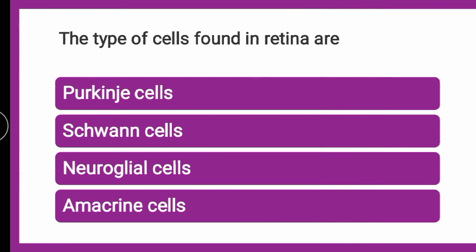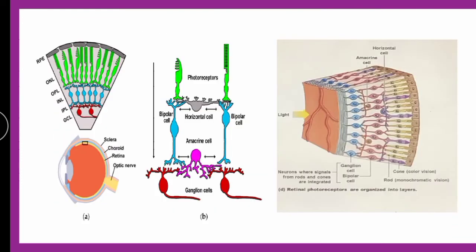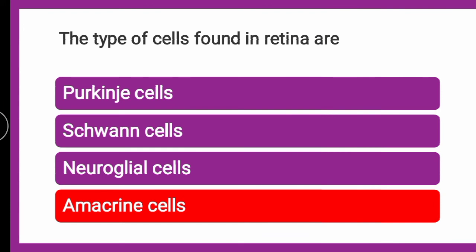Next question: the type of cell found in the retina — whether it is Purkinje cell, Schwann cell, neuroglial cell, or amacrine cell? In the diagram you can see the different types of retinal cells: ganglionic cells, bipolar cells, and between the bipolar and ganglionic cells, the amacrine cell. So the correct answer is amacrine cell.